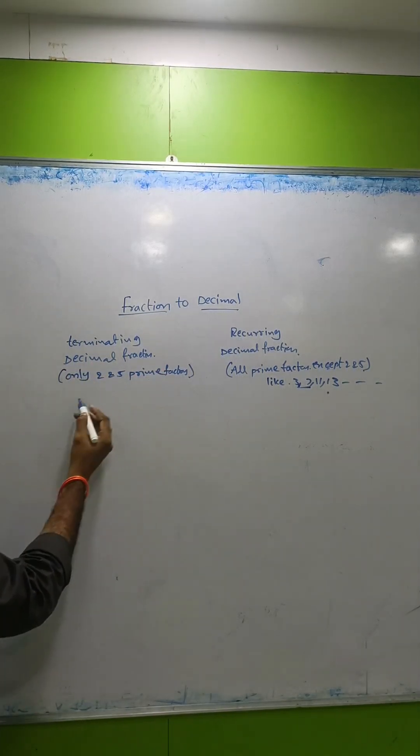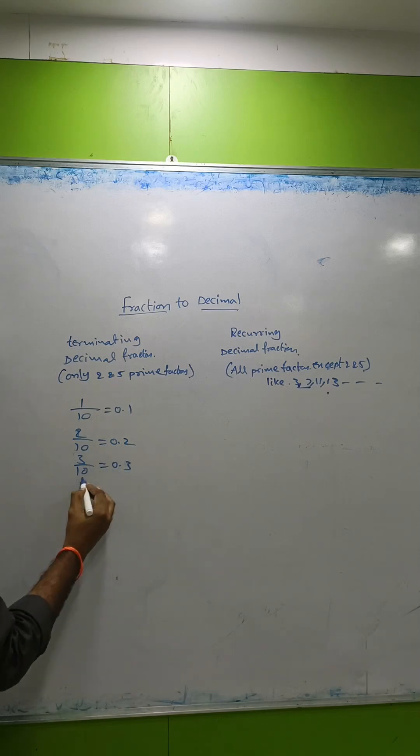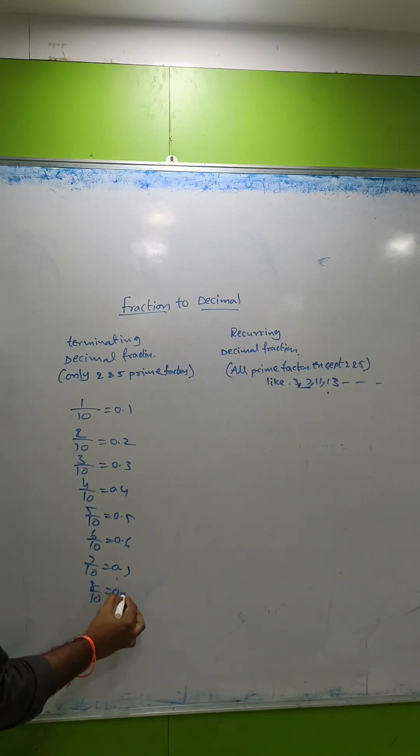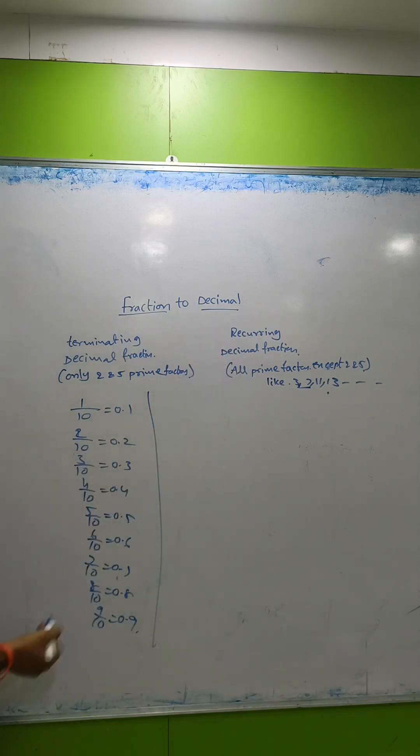First, terminating decimal fractions: 1/10 = 0.1, 2/10 = 0.2, 3/10 = 0.3, 4/10 = 0.4, 5/10 = 0.5, 6/10 = 0.6, 7/10 = 0.7, 8/10 = 0.8, 9/10 = 0.9. These are terminating decimals.